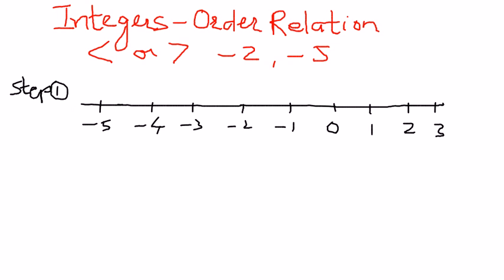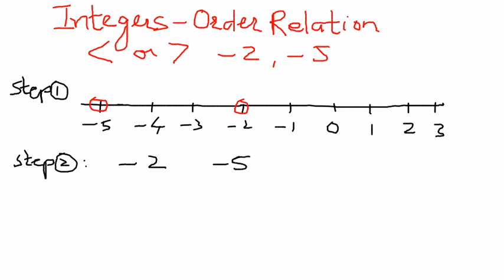Now we want to recognize where these two numbers are — negative 2 and negative 5. Negative 5 is here. Negative 2 is here. In step 2, we want to know which symbol to place between negative 2 and negative 5. Negative 2 is closer to the origin than negative 5.